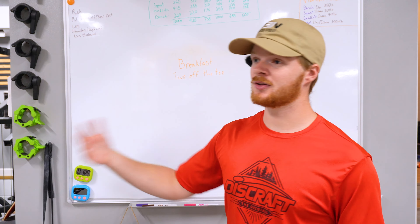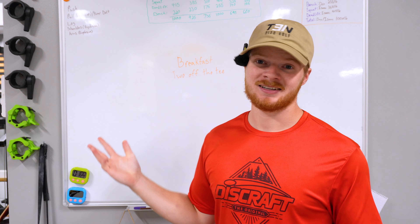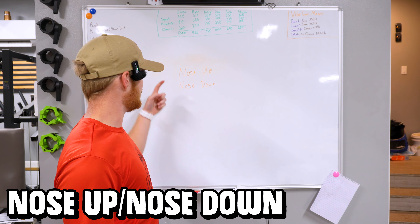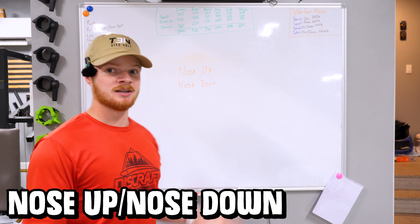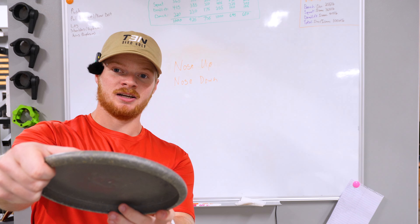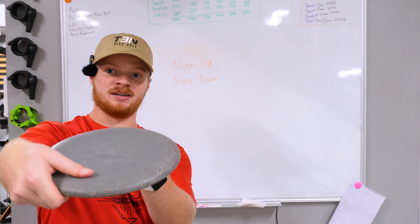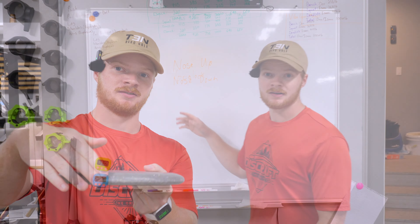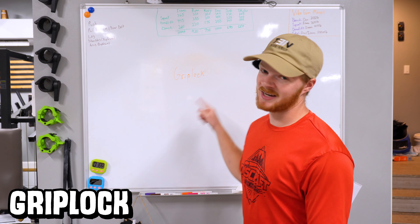Next, we have "good bid." I feel like I hear this the most out of pretty much anything in disc golf. This basically means good try — like if you have a 30-foot putt and you hit the cage or the band or you just missed the putt and somebody says "good bid," they're basically just saying good try. Oh, good bid, good bid.